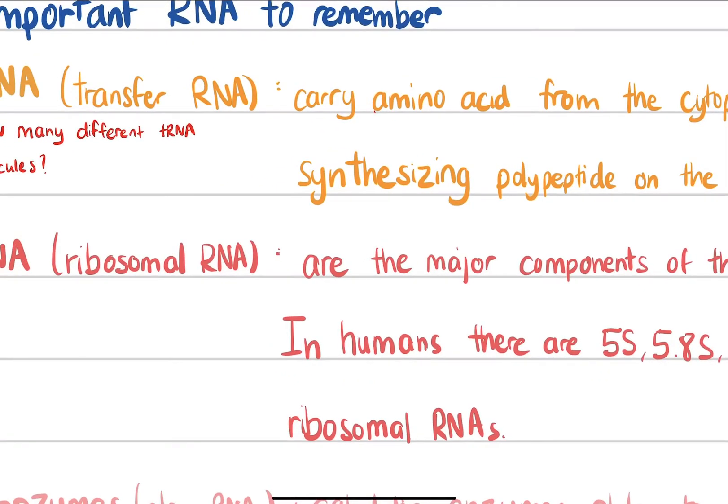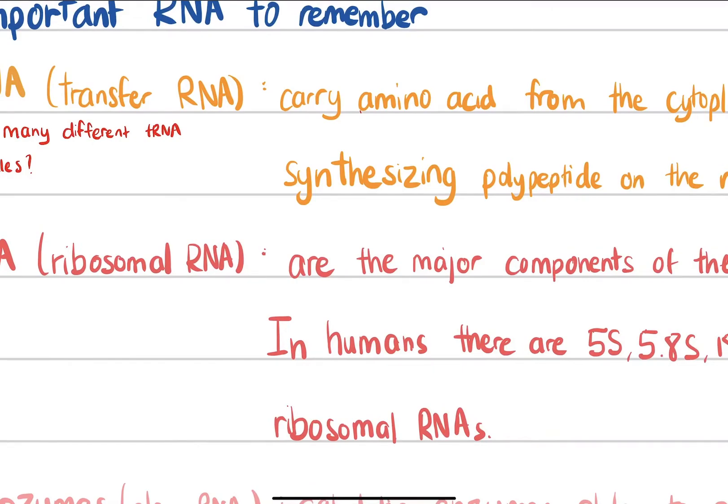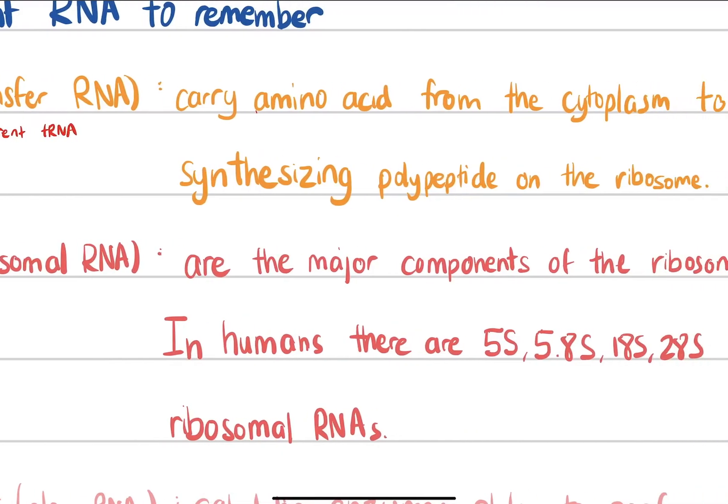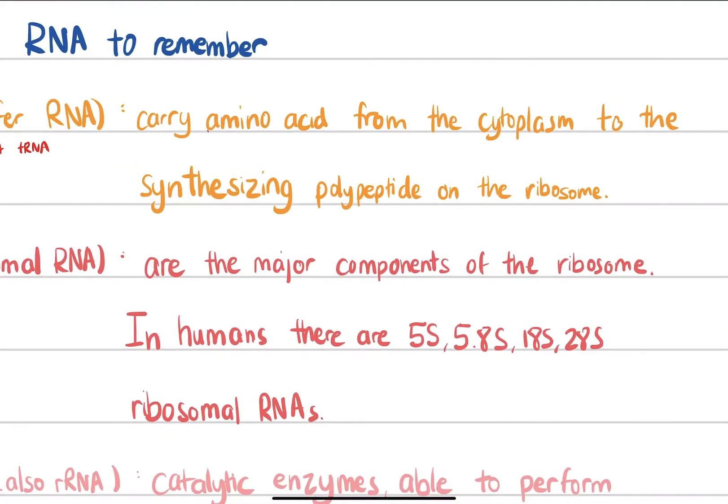The rRNA is the RNA part of the ribosome complex. Our ribosomal RNAs in the human body include the 5S, the 5.8S, the 18S, and the 28S.